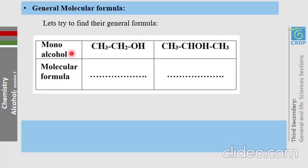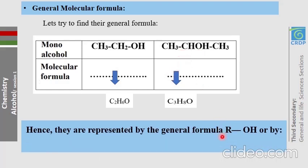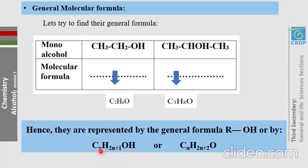Let us determine the general molecular formula of alcohols. For example, one molecule is C2H6O and another is C3H8O. The general molecular formula of alcohols is R-OH. Since R has the general formula CnH2n+1, alcohols can be written as CnH2n+1OH, or simply CnH2n+2O.